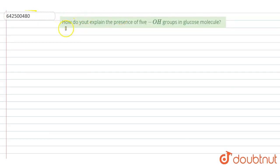Hello everyone, let's start the question. The question says, how do you explain the presence of 5 OH groups in glucose molecules?